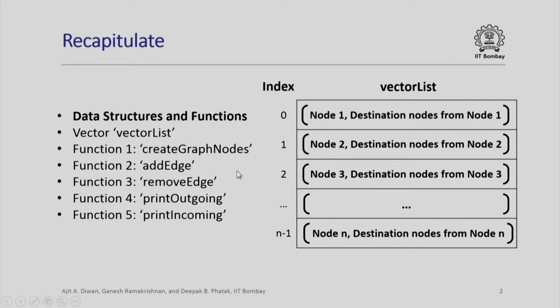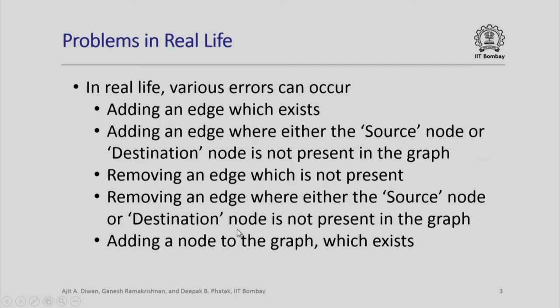We had also written functions to create graph nodes, to add an edge, to remove an edge, and also two functions to print outgoing and incoming edges. We had said at that time that there could be problems in real life, such that we may try to add an edge which already exists, or we might add an edge where either the source node or the destination node is not present in the graph. Exactly similar problems could occur during the removal operation.